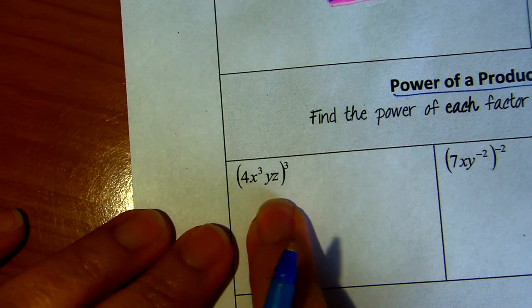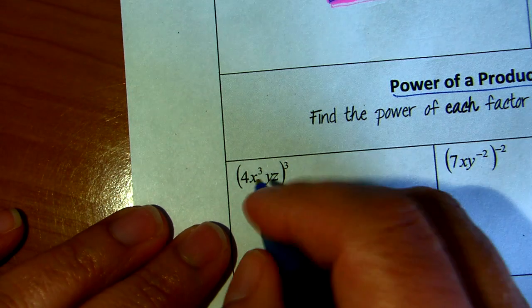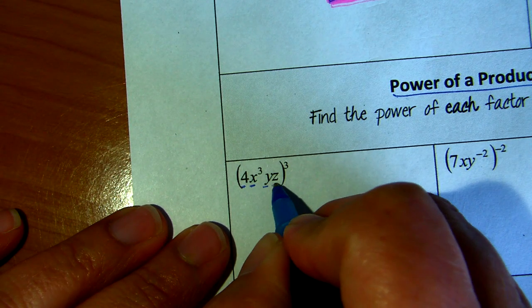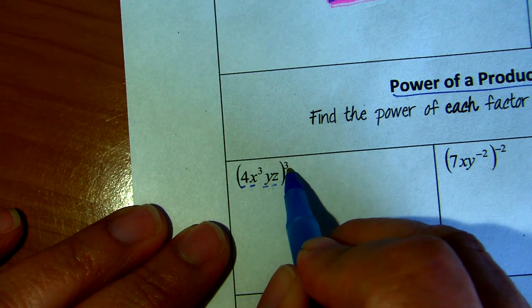So let's do this one. You have a 4, an X, a Y, and a Z. All these three elevated to the power of 3.